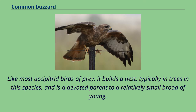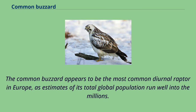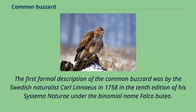Like most Accipitrid birds of prey, it builds a nest, typically in trees, and is a devoted parent to a relatively small brood of young. The common buzzard appears to be the most common diurnal raptor in Europe, as estimates of its total global population run well into the millions. The first formal description of the common buzzard was by the Swedish naturalist Carl Linnaeus in 1758 in the 10th edition of his Systema Naturae under the binomial name Falco Buteo.